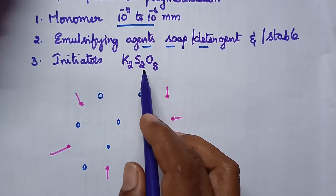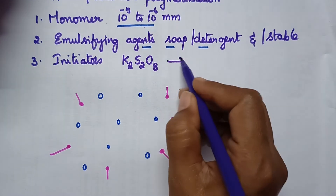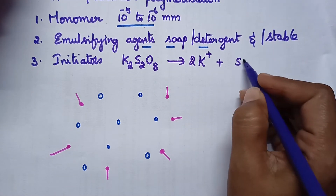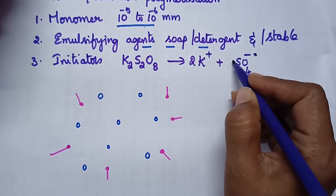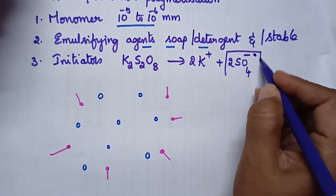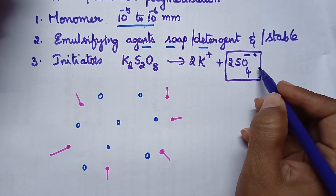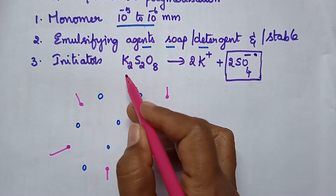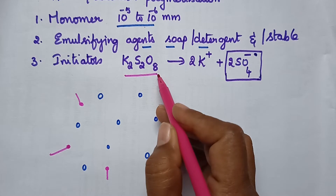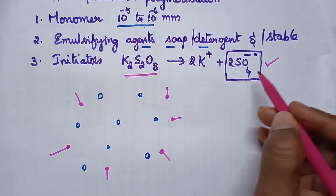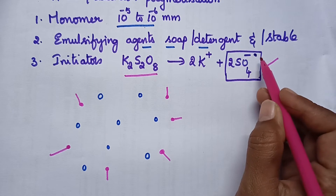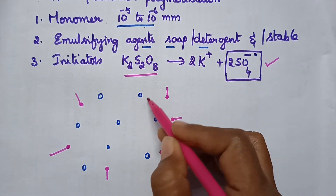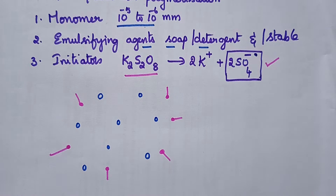The initiator dissociates into a cation and results in the formation of a sulfate ion and a sulfate ion radical. The sulfate ion radical is the actual attacking reagent on the monomer. Whenever persulfate is added into the solution, it dissociates and results in the formation of a sulfate ion radical, which is highly active and attacks the monomers present in the monomer droplet.